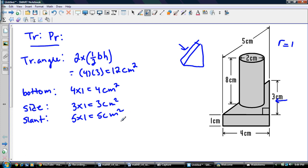Okay, so, we do the total, so that's going to be 24 centimeters squared. So, the total for my triangular prism is 24 centimeters squared.